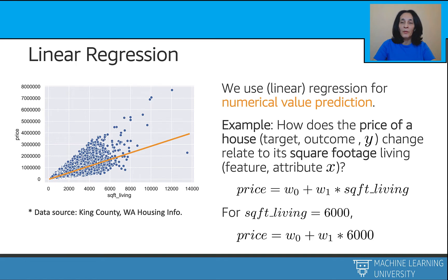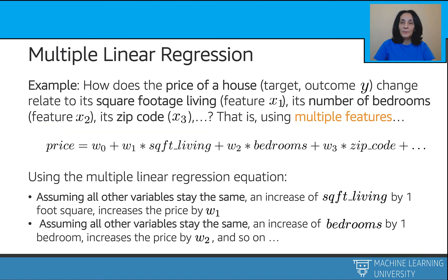For a house with 6,000 square feet of living space, the sale price is simply w0 plus w1 times 6,000. An increase of one square foot living increases the price by w1 dollars — w1 is how much each square foot living weighs towards the price. We call these w0 and w1 the weights of the linear regression model. We can also include features like number of bedrooms or zip code, extending the regression equation with more features and their corresponding weights — this is traditionally called multiple linear regression.